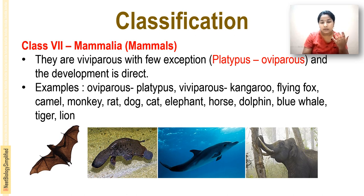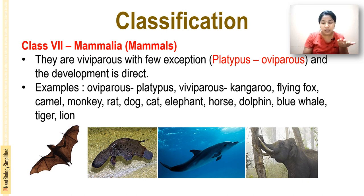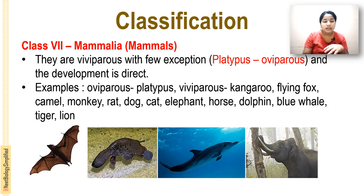Mammals are viviparous — giving birth to young ones — with a few exceptions. The platypus is an exceptional oviparous mammal. Development is direct. Examples: oviparous — Platypus; viviparous — kangaroo, flying fox, camel, monkey, rat, dog, cat, elephant, lion, horse, dolphin, and blue whale.